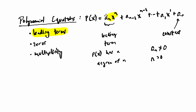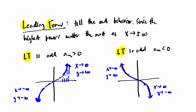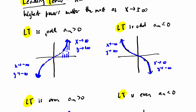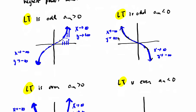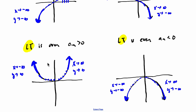How can we prove that the leading term really shows you what's happening in a polynomial? We said in the last video: if you have an odd-degree polynomial, the end behaviors will look very similar to a cubic polynomial with a positive coefficient, or with a negative coefficient. And when the degree is even, the end behavior looks like that of a parabola with a positive or negative coefficient.